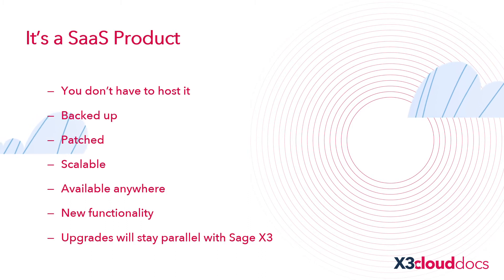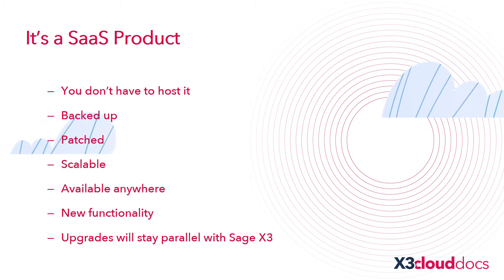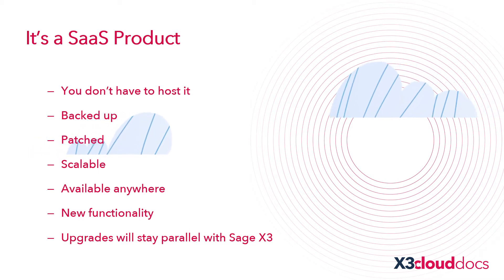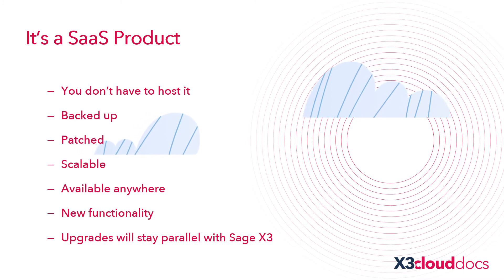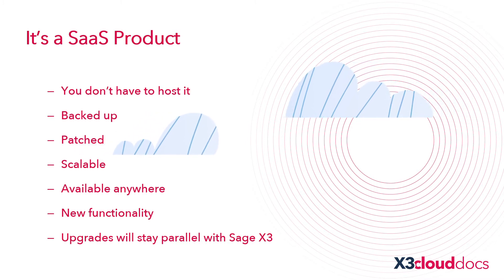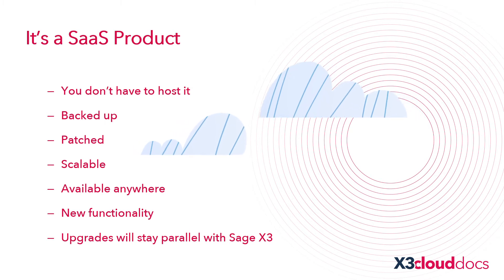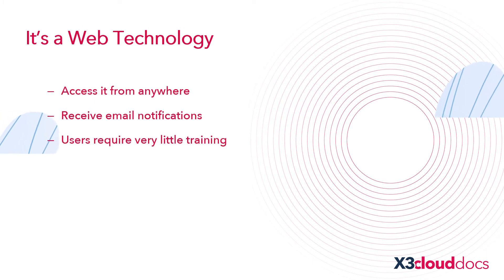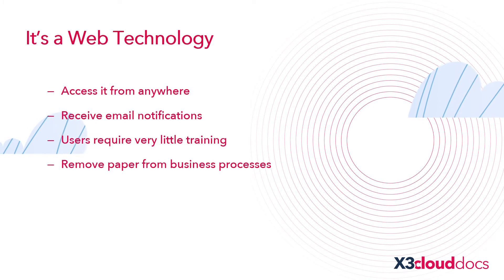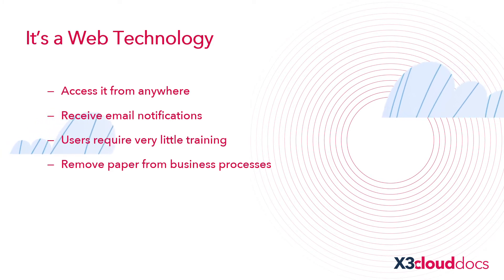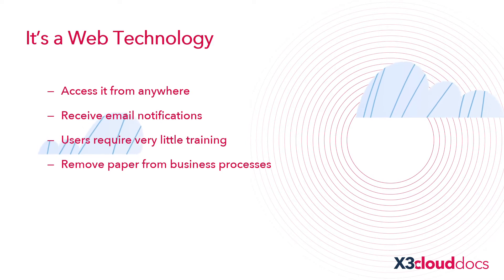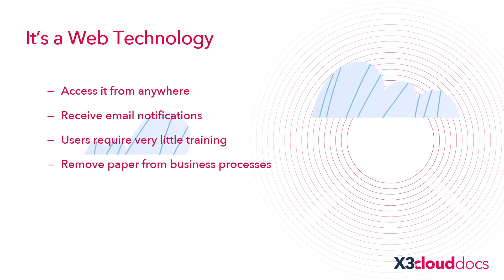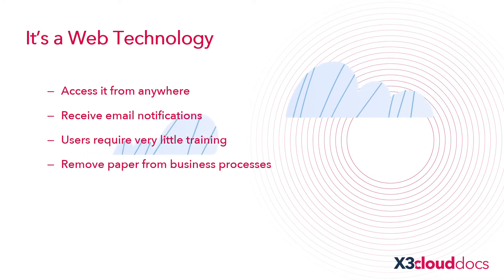X3 Cloud Docs is a SaaS product, so you have the benefit of not having to host it. It's automatically backed up, patched, and highly scalable. During the Covid pandemic, availability anywhere is of highest importance. It also provides new functionality and upgrades that stay parallel to X3. It's accessible anywhere, you can receive notifications on your mobile phone, users require very little training, and it removes paper from the business, which is beneficial from both an environmental and process standpoint.